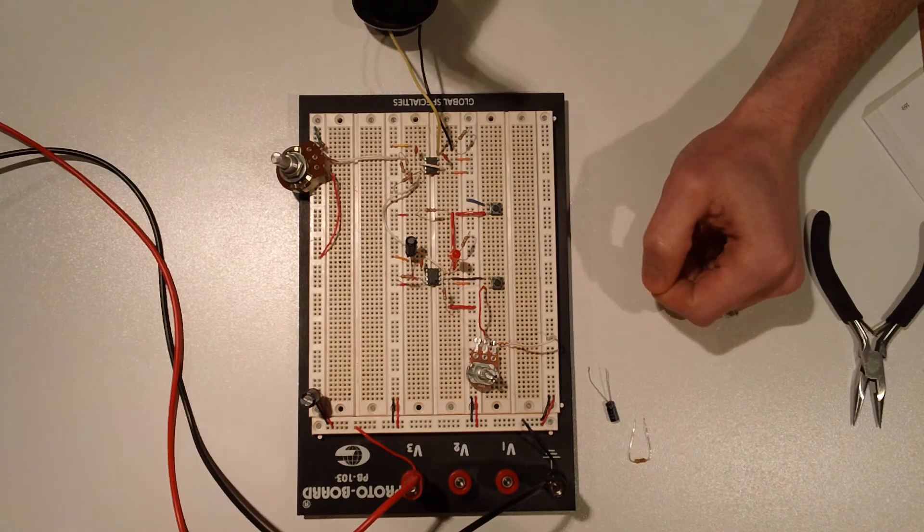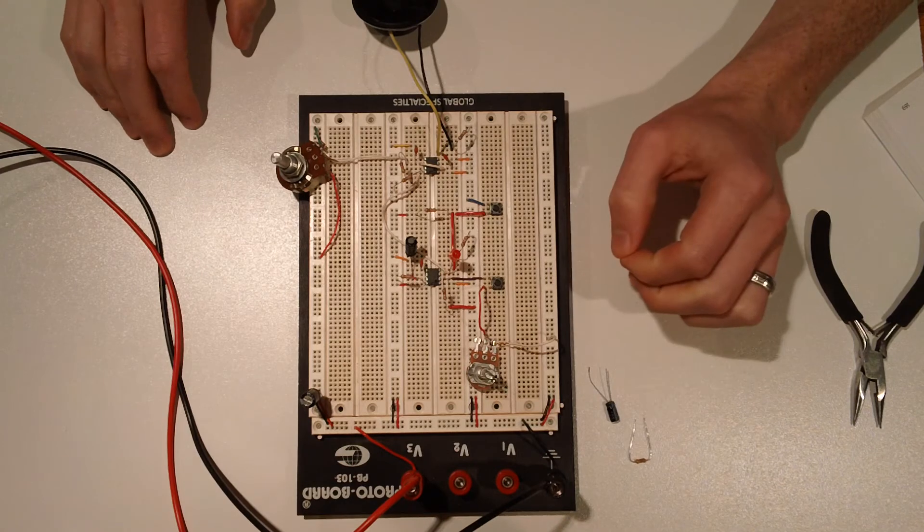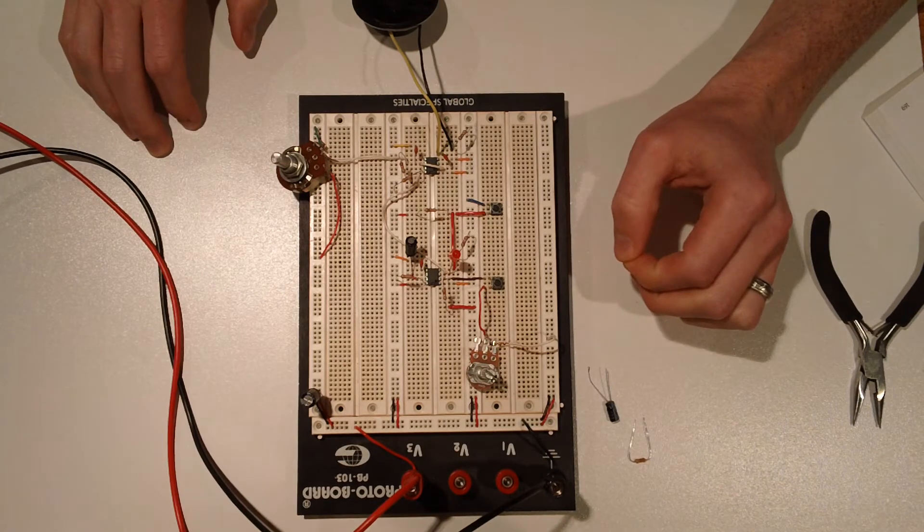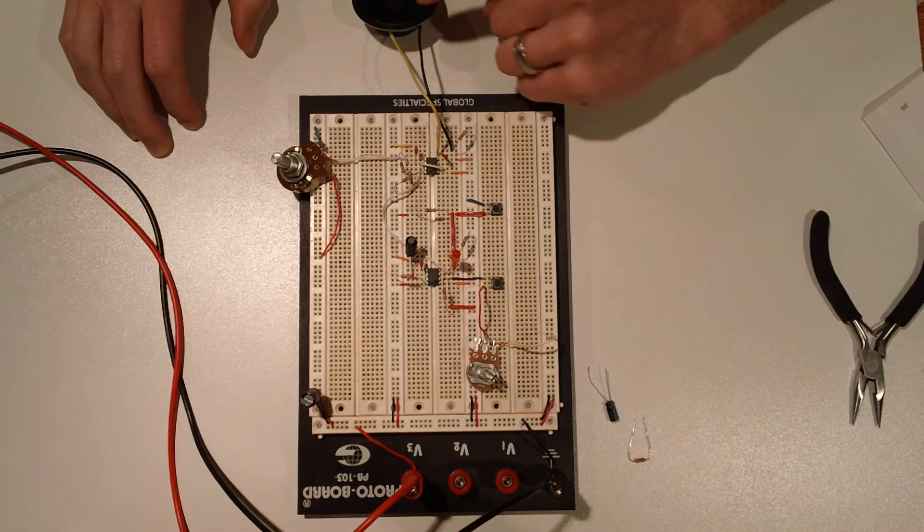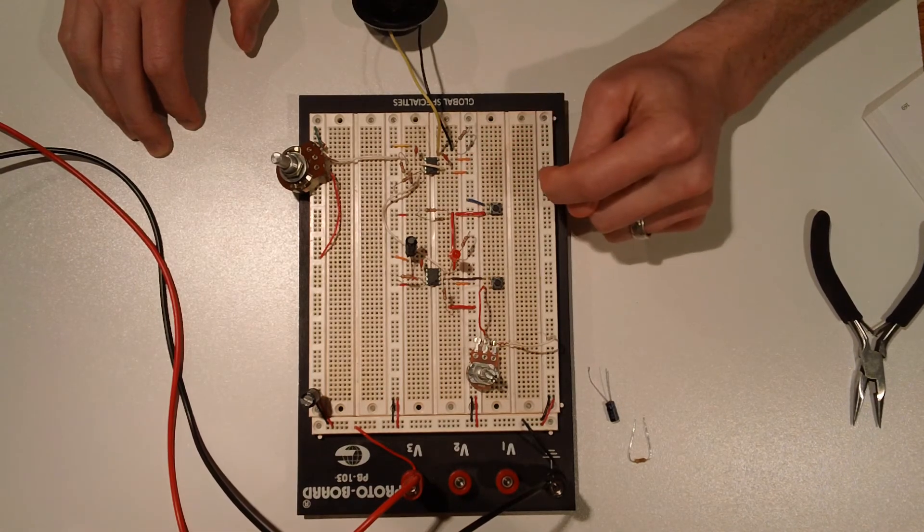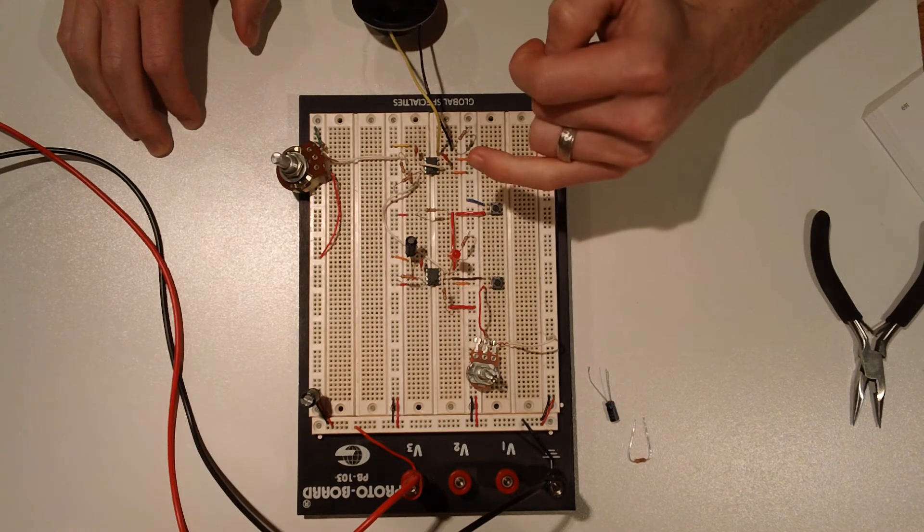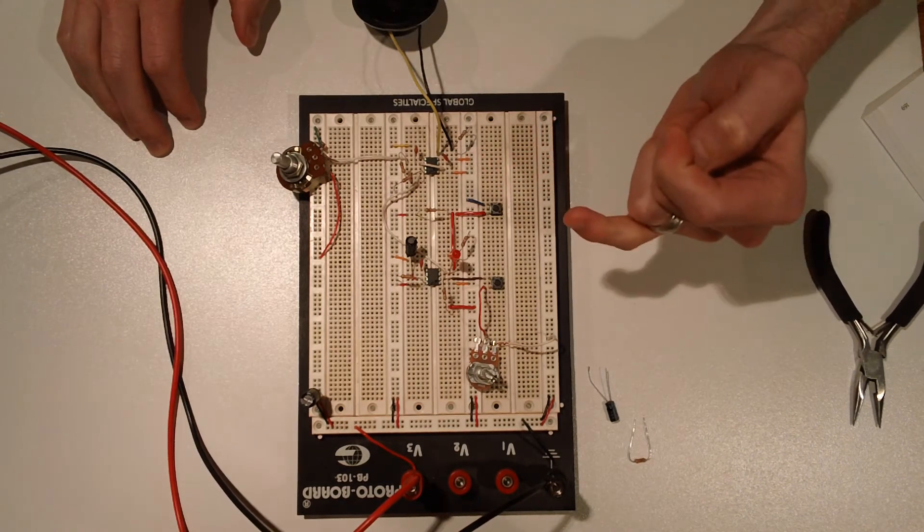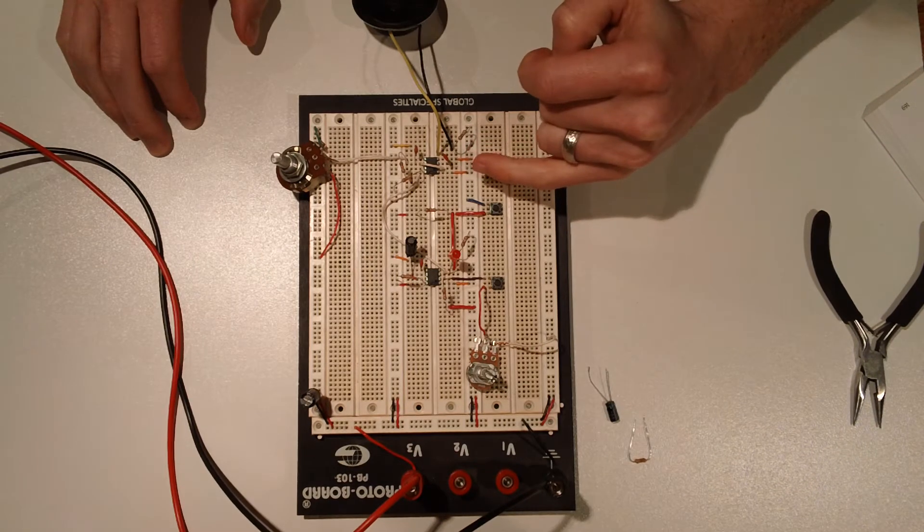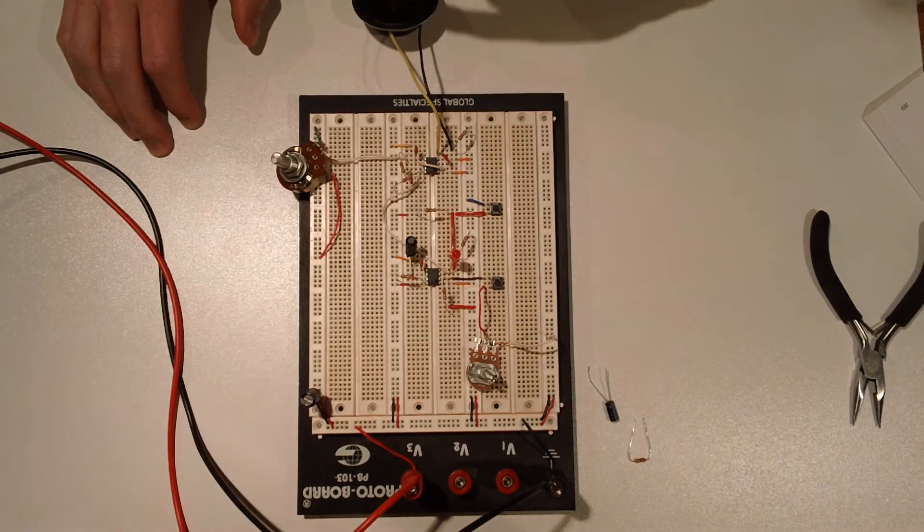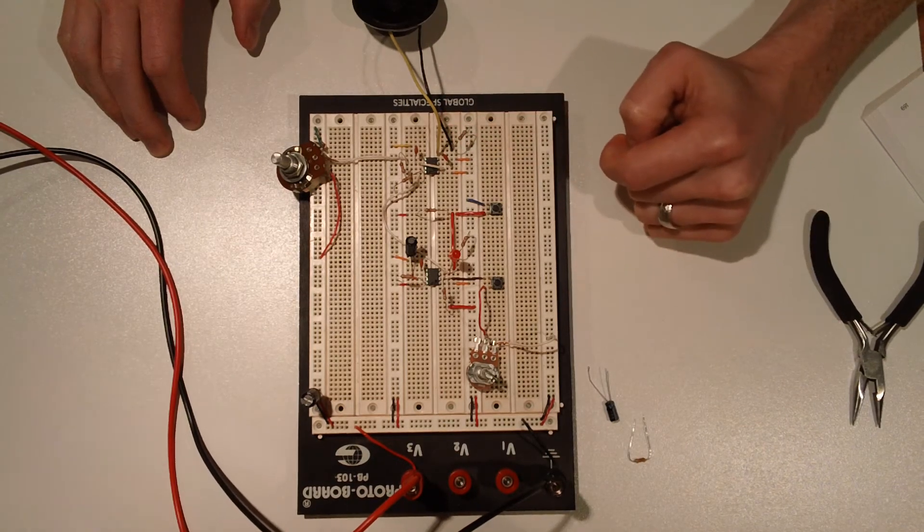So that's pretty much it. The one thing that stumped me on this experiment, it actually stumped me for quite some time, was the diagram in the book for the output for this second 555 circuit. It basically had the pin 3 output of this chip running straight through the speaker, through the resistor, to ground.